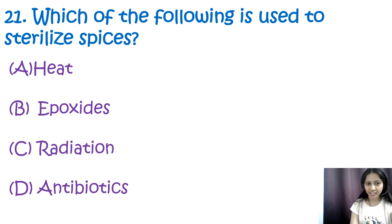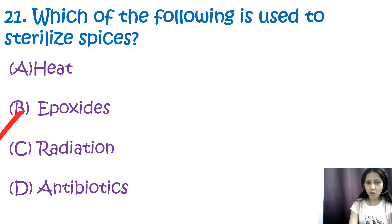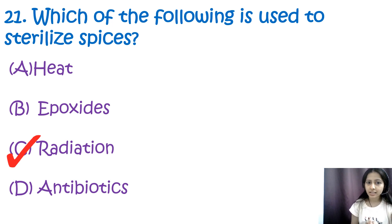Question 21: Which of the following is used to sterilize spices? Options are heat, epoxides, radiation, and antibiotics. The correct answer is C, radiation. Radiation sterilization — specifically gamma irradiation — is a common method used to sterilize a variety of items including spices. This method is effective and does not involve any chemicals.